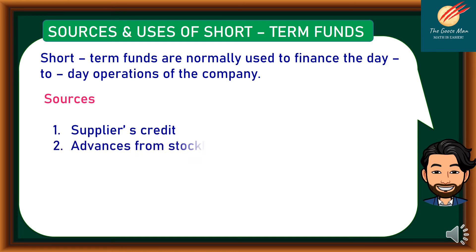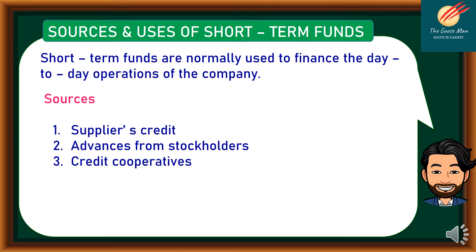Number two, advances from stockholders. If you have enough personal assets and control the company, advancing funds to the company when there are financial requirements is an easy way to raise funds. Number three, credit cooperatives. To borrow from credit cooperatives, you have to be a member. Credit cooperatives can lend as much as five times your equity or contributions.